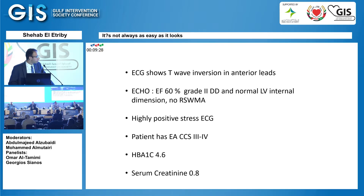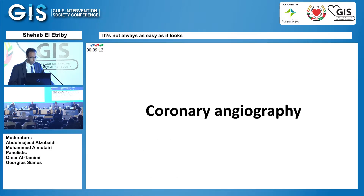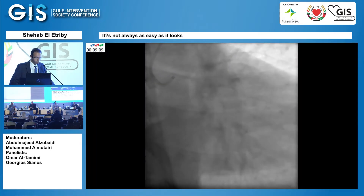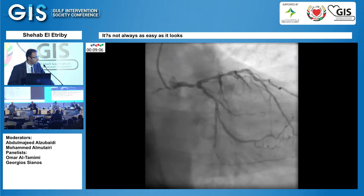Somebody sent him to do a stress ECG — I don't know why, he was probably trying to kill him. He had a highly positive stress ECG with significant hypotension and was about to die on the stress ECG. He was not diabetic, serum creatinine was normal, and we opted for coronary angiography.